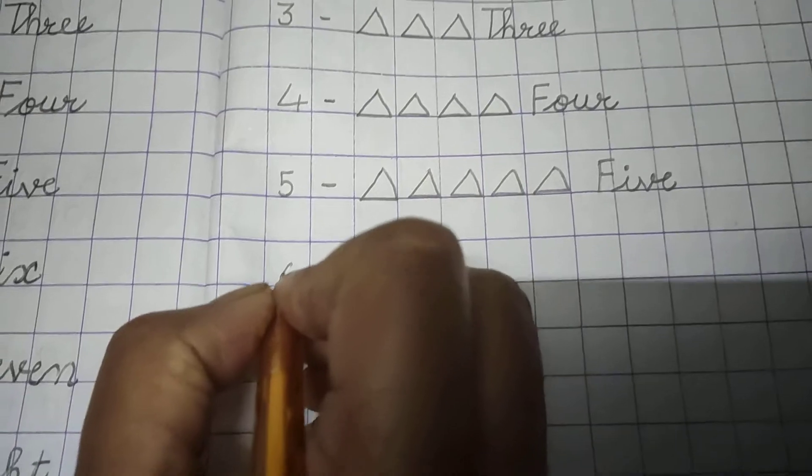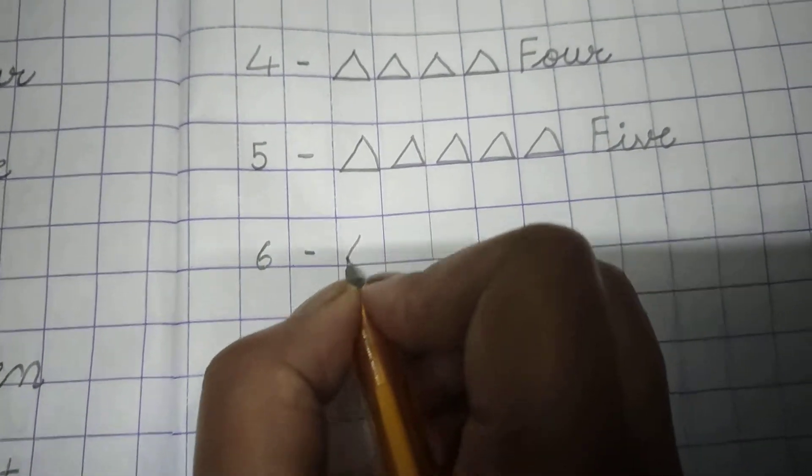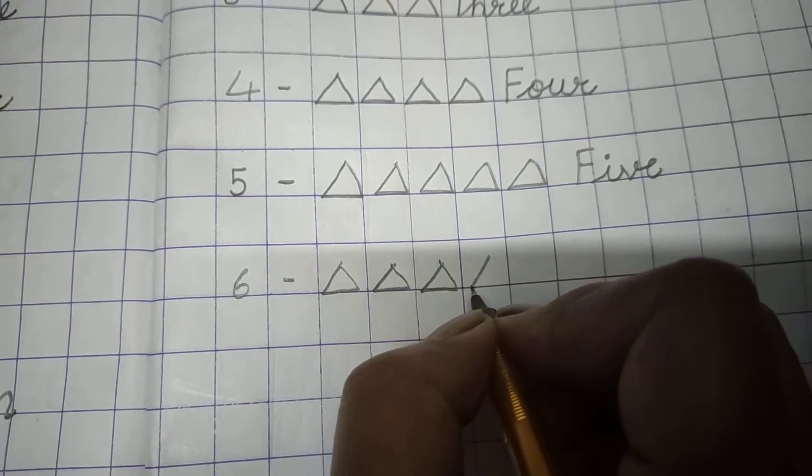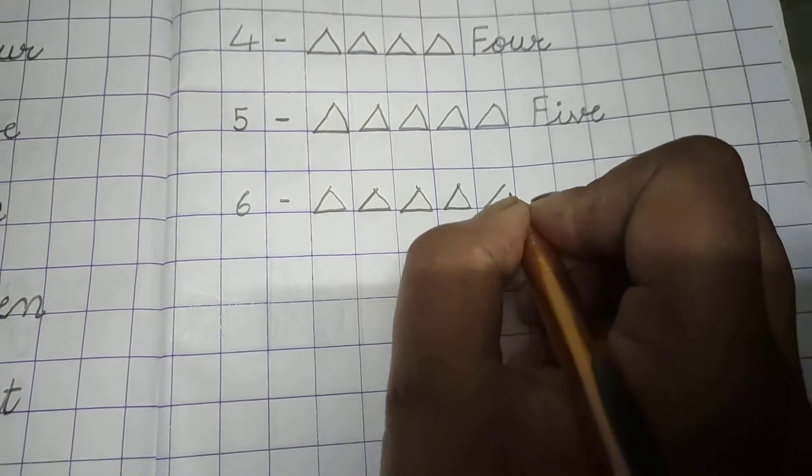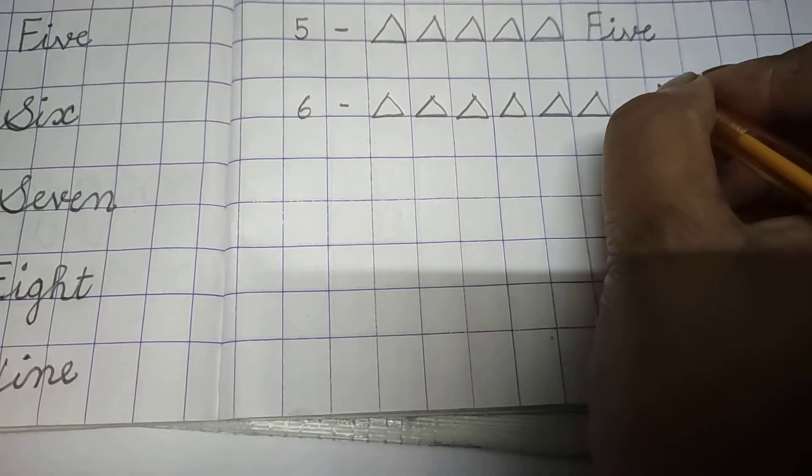6. 6 triangles we have to draw. 1, 2, 3, 4, 5, 6. And now write down 6.